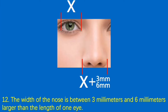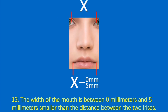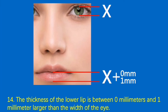Condition 12: The width of the nose is between 3 millimeters and 6 millimeters larger than the length of one eye. Condition 13: The width of the mouth is between 0 millimeters and 5 millimeters smaller than the distance between the two irises. Condition 14: The thickness of the lower lip is between 0 millimeters and 1 millimeter larger than the width of the eye.